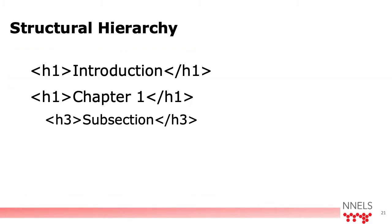Next is structural hierarchy. Headings are a key way for readers who use assistive technology to understand how the book is laid out. It is important to know when a new section begins and to navigate efficiently between sections. In a book, a level 1 heading should be used for major sections such as chapters, and titles of subsections within chapters should be marked up with a level 2 heading, and so on.